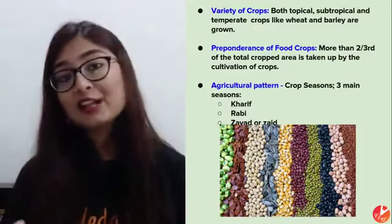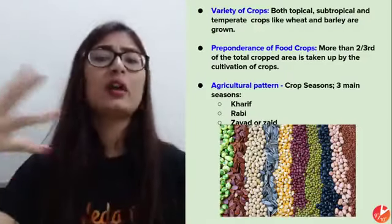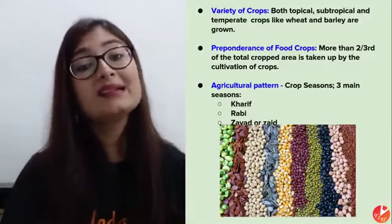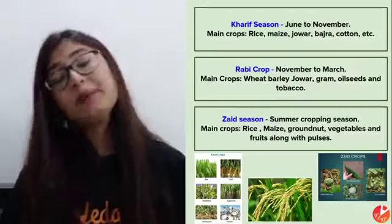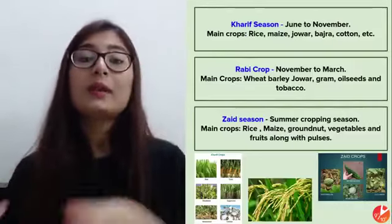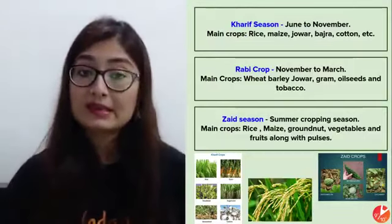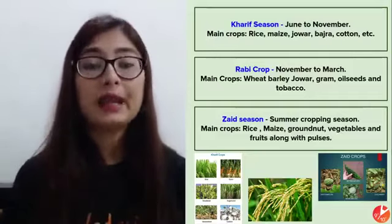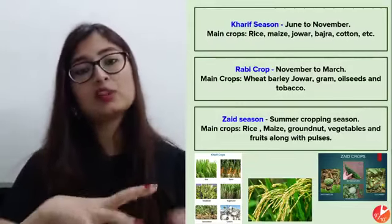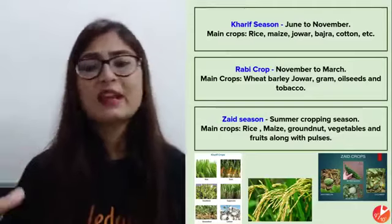Based on seasons, our agricultural pattern has been divided into three types: Kharif, Rabi, and Zaid. Kharif crops are those sown around June and harvested around November — examples include rice, maize, and jowar. This division is based on which part of the year the cultivation happens.